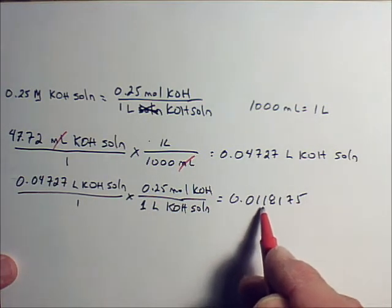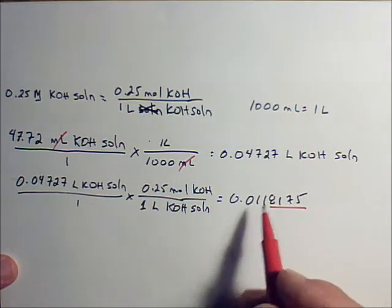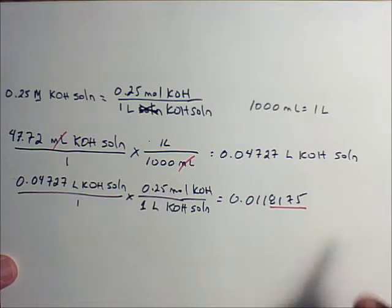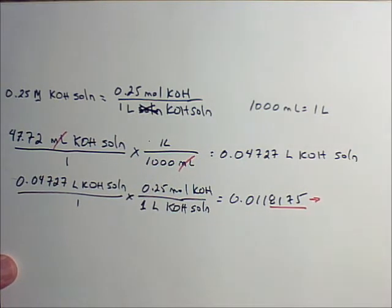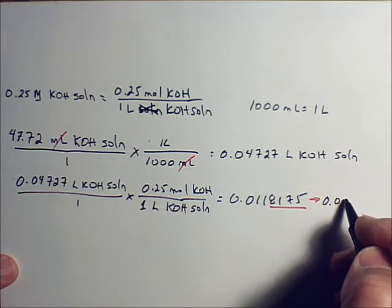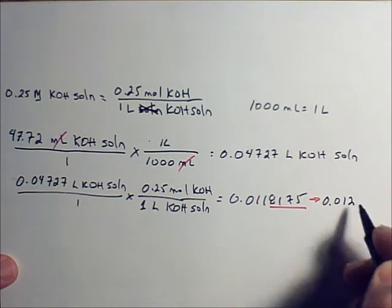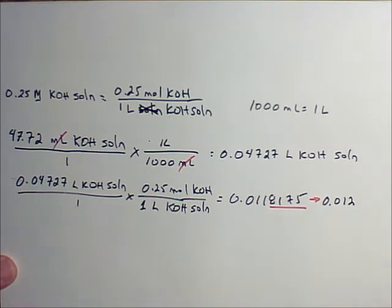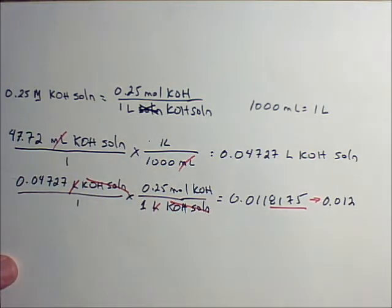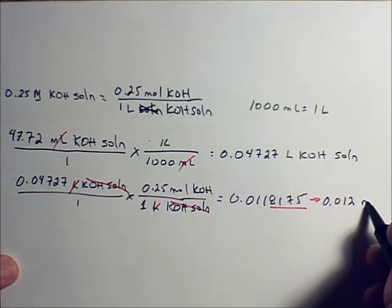Leading zeros are not significant. So we're going to underline starting with the 1. These two digits are significant and these four are not. Draw an arrow. We round it off to 0.012. Liters cancel. KOH solution cancels. So we have moles of KOH now.